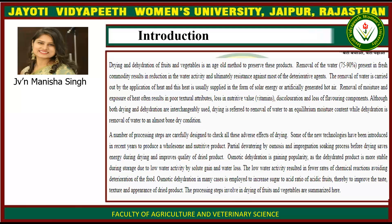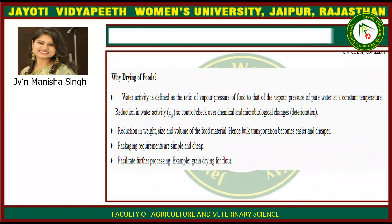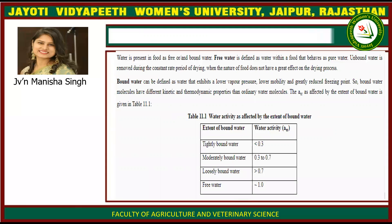The processing steps involved in drying of fruits and vegetables are summarized. Why drying of foods? Water activity is defined as the ratio of vapor pressure of food to that of the vapor pressure of pure water at a constant temperature. Reduction in water activity controls or checks chemical and microbiological changes — that is, deterioration. Reduction in weight, size, and volume of the food material makes bulk transportation easier and cheaper. Packaging requirements are simple and cheap, and facilitate further processing — for example, grains drying for flour making.